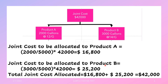For product B, it will be 3,000 divided by 5,000 (the total of 3,000 plus 2,000), multiplied by $42,000 — that gives $25,200. If you check the total, $25,200 plus $16,800 equals $42,000. So this is a very simple way to allocate joint cost among the products produced.